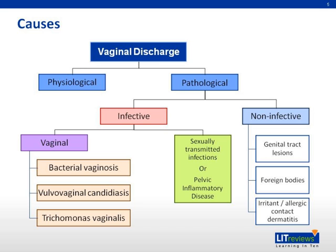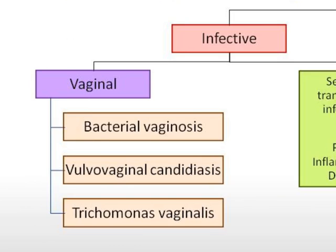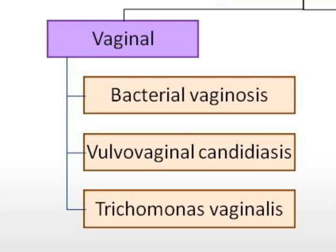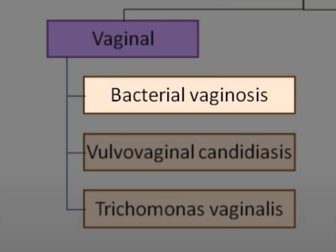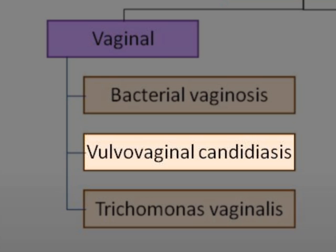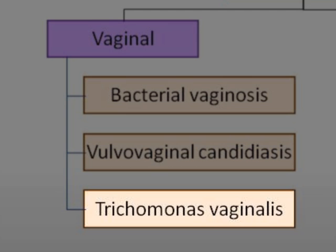Vaginal discharge can be either physiological or pathological. Pathological causes can be further divided into infective or non-infective causes. The commonest cause is physiological, but infective causes should be excluded. We will be focusing on the major common causes of infective vaginal discharge, mainly bacterial vaginosis, vulvovaginal candidiasis, and Trichomonas vaginalis.